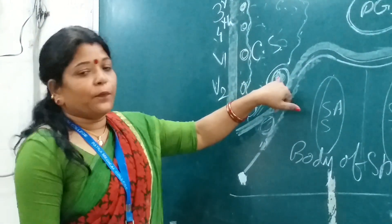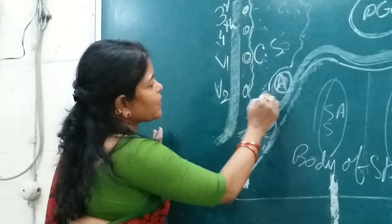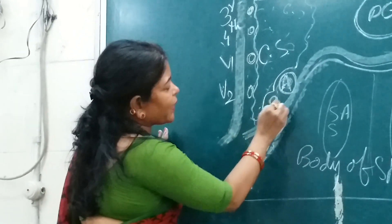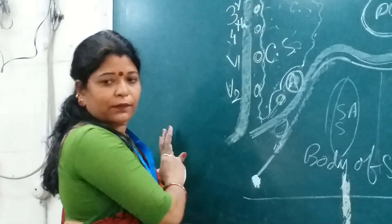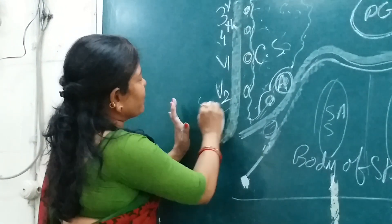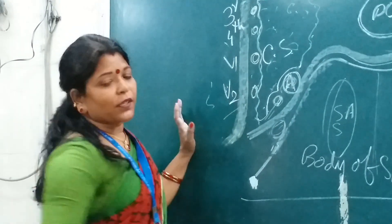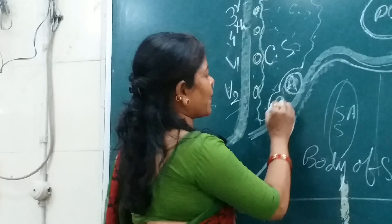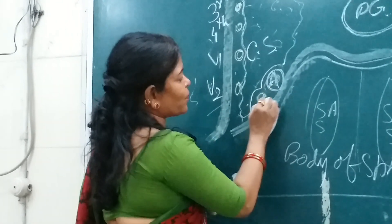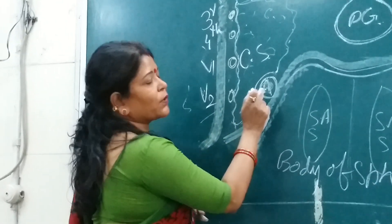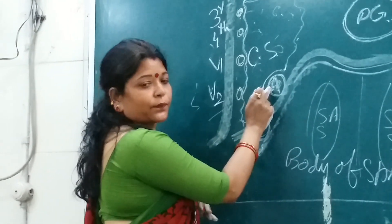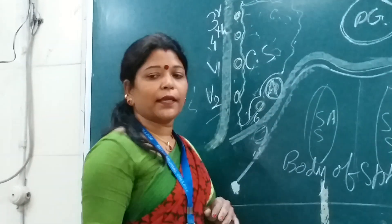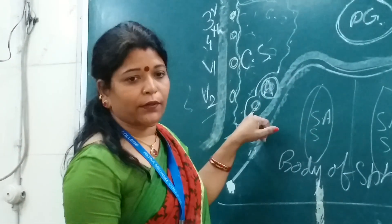The internal carotid artery is present towards the inferomedial aspect of the sinus. And there is one more nerve - the sixth cranial nerve, the abducens nerve - which is present inferolateral to the internal carotid artery.